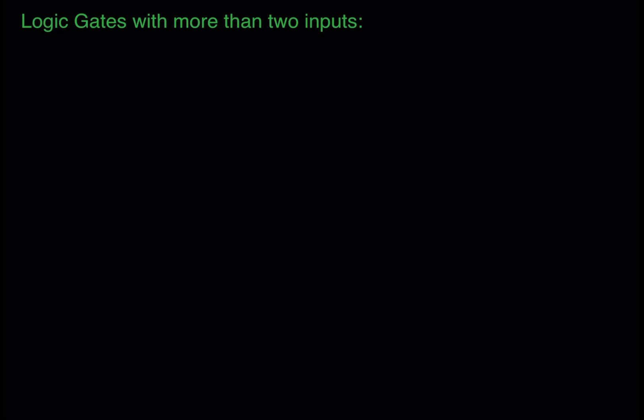Hello guys, welcome back. In today's session we'll be talking about logic gates with more than two inputs. We did cover those major gates — AND, OR, NOR, NAND, XOR, and XNOR. We covered all six gates in a basic manner, and we pretty much covered two-input logic gates with a truth table.